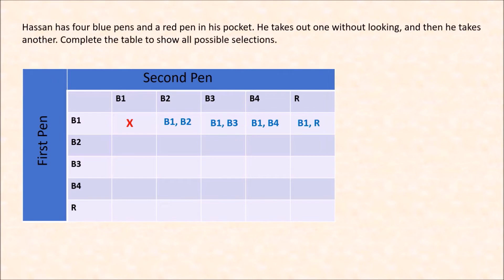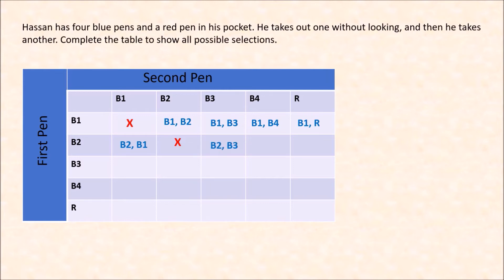If the first selection is B2, the second could be B1, giving B2, B1. Again, B2 and B2 does not exist because he did not put the pen back, so he cannot select B2 again. The list continues: B2, B3; B2, B4; B2, red. Similarly for B3: B3 with B1, B3 with B2, B3 then B3 does not exist.